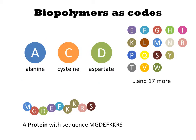Proteins are composed of 20 different units called amino acids. Here you see a protein with the sequence MGDEFKKRS.